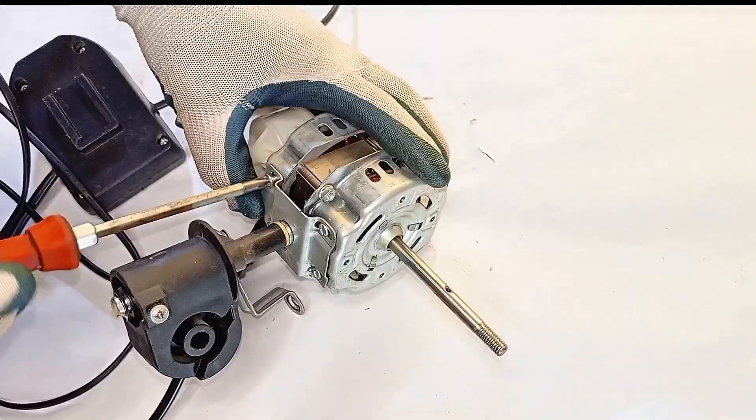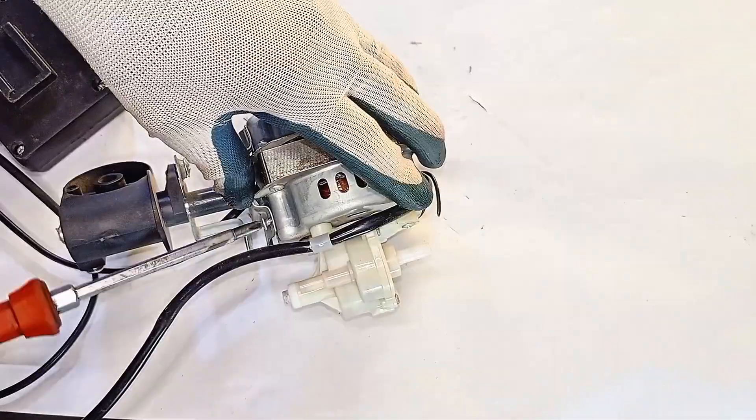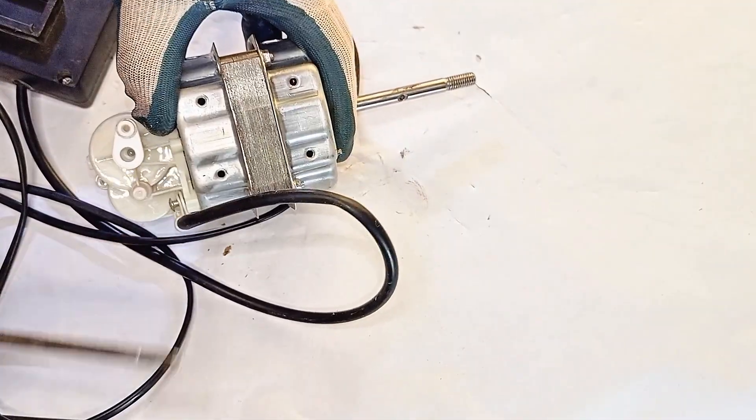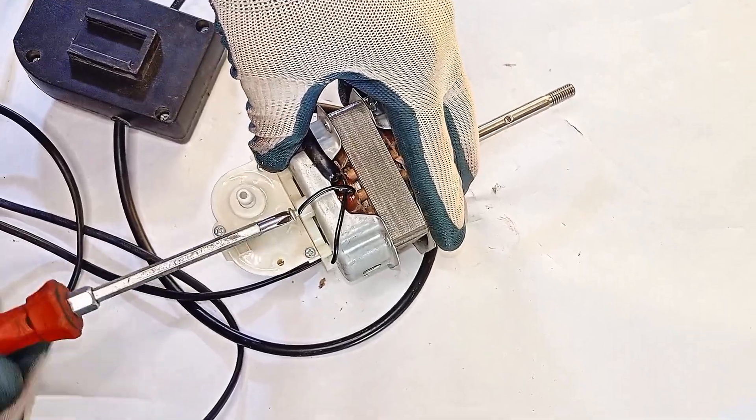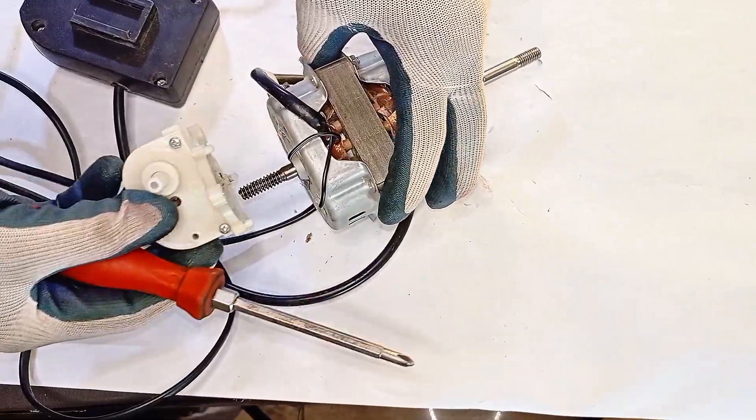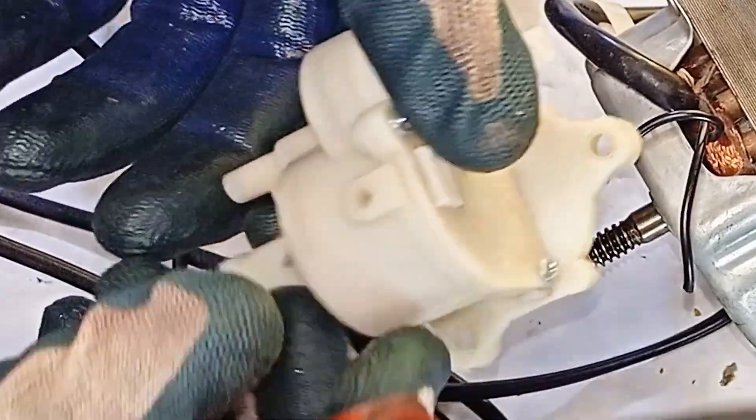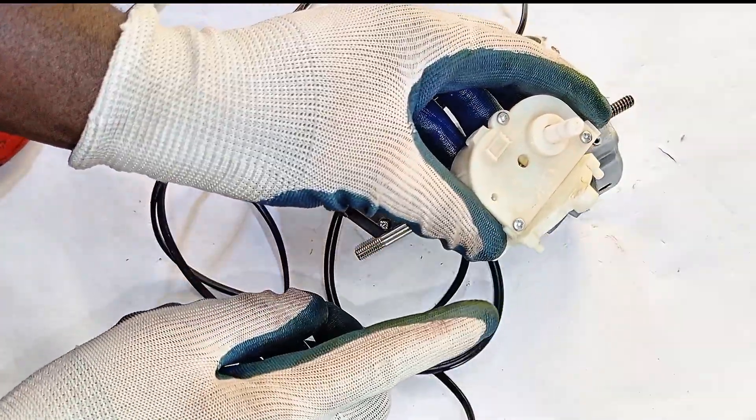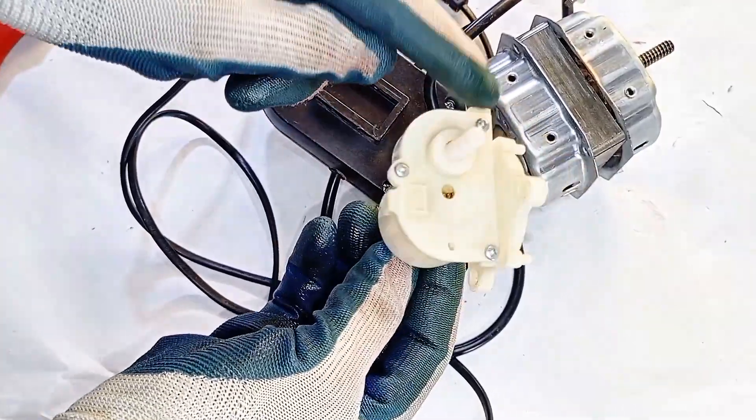The capacitor passed the test, but something's still wrong. Time to unscrew the motor and look closer. Right here, this is the plastic gearbox, the part that makes the fan swing side to side. But since our fan isn't powering on at all, this doesn't look guilty just yet, so we'll leave it sealed for now.